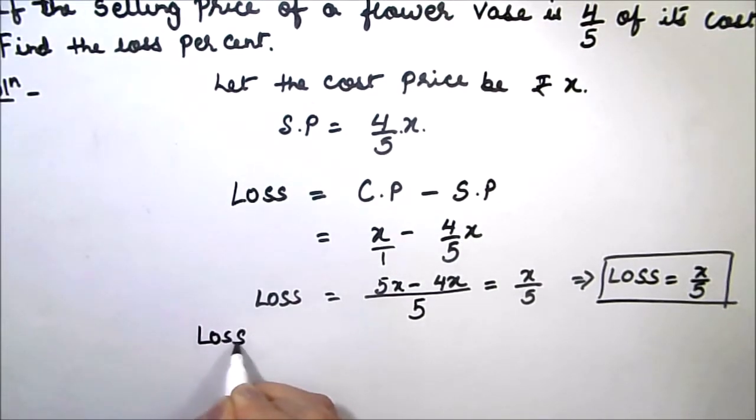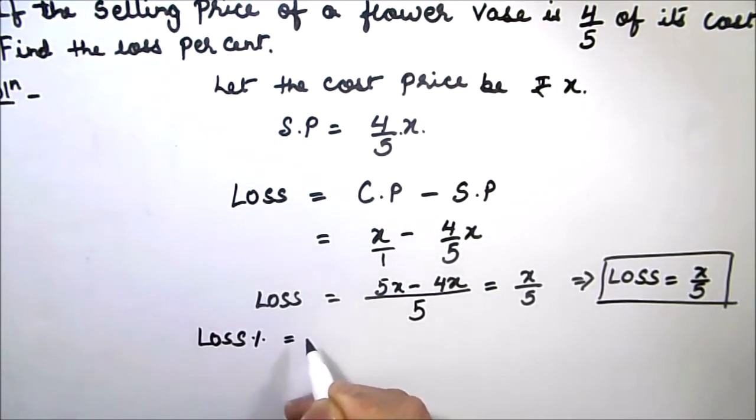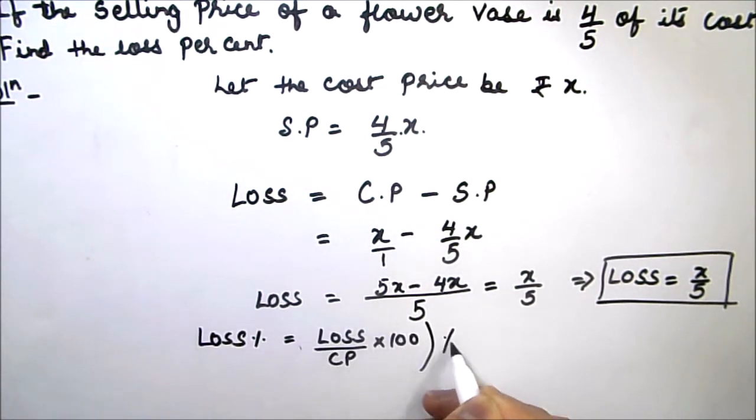Loss percent equals loss divided by cost price times 100 percent. This is the formula for loss percent.